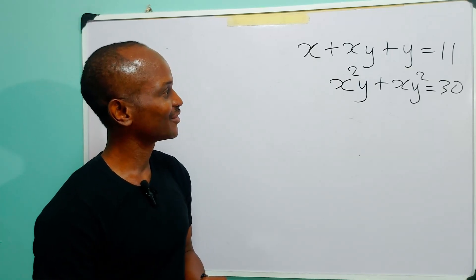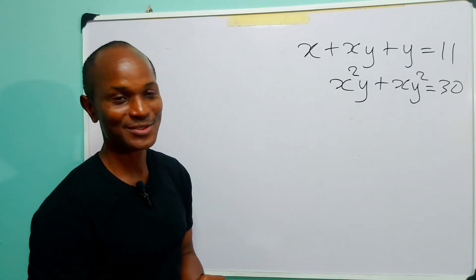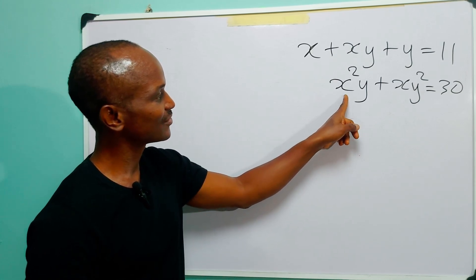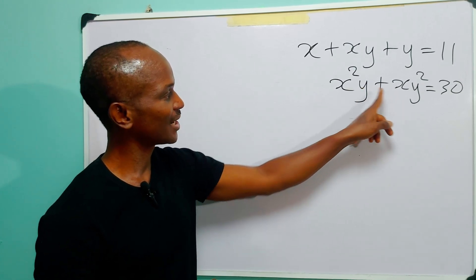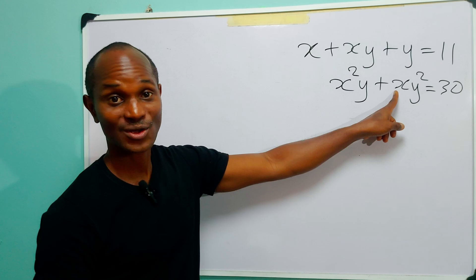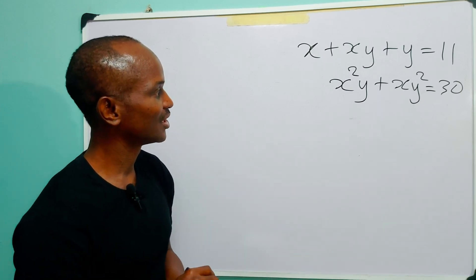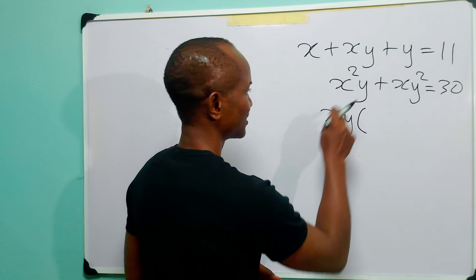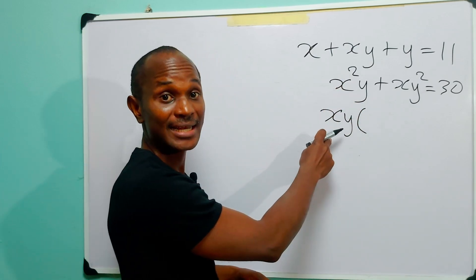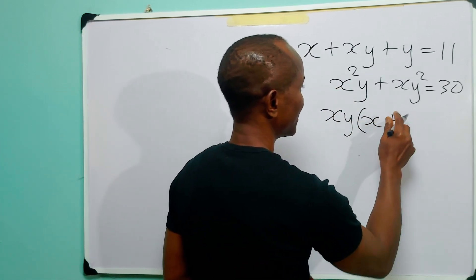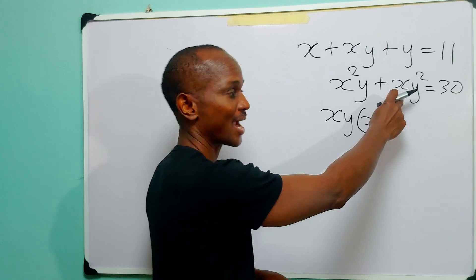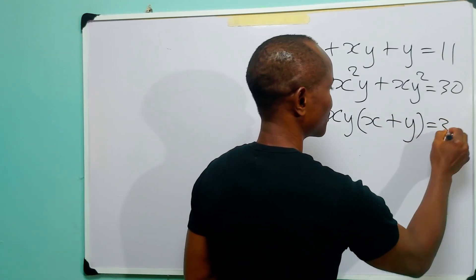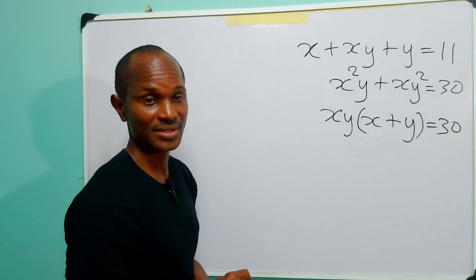Hello and welcome. Our task for today is to solve the system of equations on the board. When we look at the second equation, we will see that we have a common factor of xy in the two terms on the left hand side. So we can factorize xy: x squared y divided by xy is x, and xy squared divided by xy is y, and this still remains equal to 30.